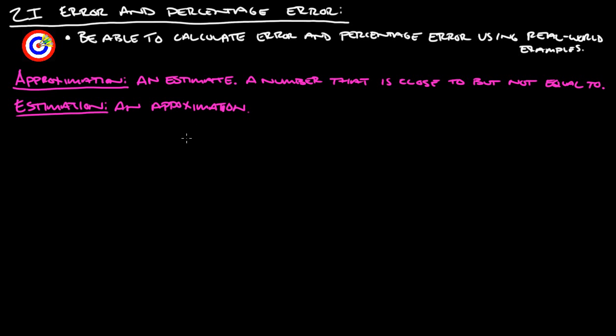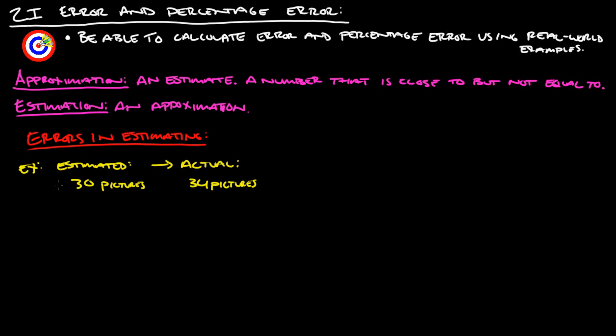Now what we're going to do is look at errors in estimating. For example, we have an estimated 30 pictures, and then in reality there were 34 pictures.